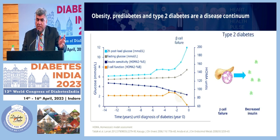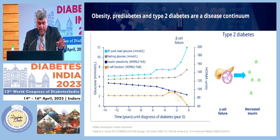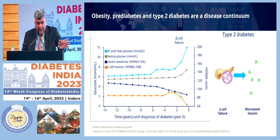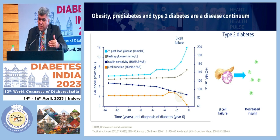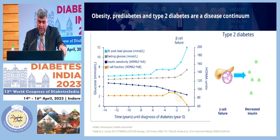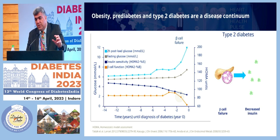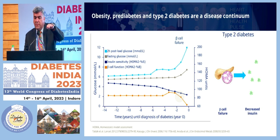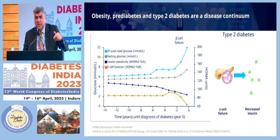When type 2 diabetes develops, post-glucose load values go up, fasting glucose rises, and you start seeing a dip in beta cell function as HOMA-BETA activity decreases and beta cell output goes down. It is all a continuum — changes in obesity occur at the level of insulin, skeletal muscle, and adipose tissue before glucose values change significantly, then the system moves toward pre-diabetes. Obesity is a major determinant for residual cardiovascular disease.